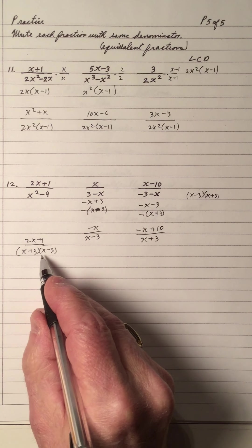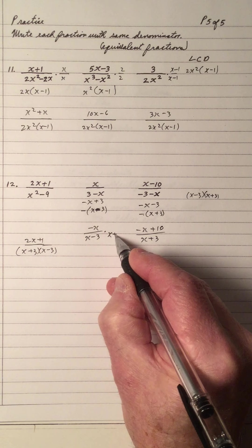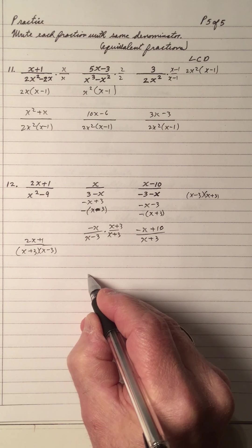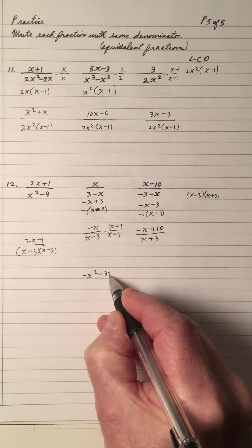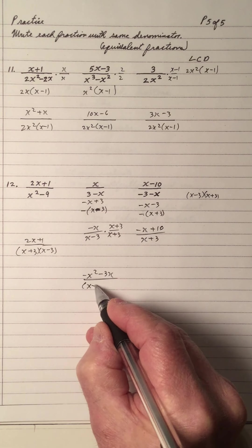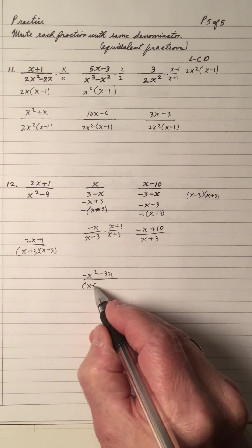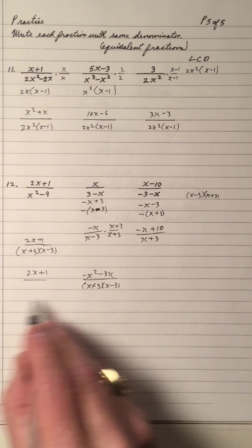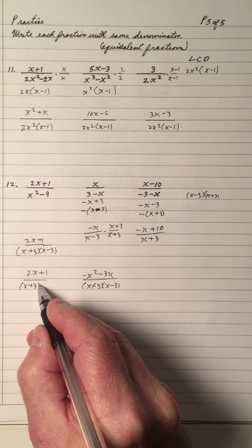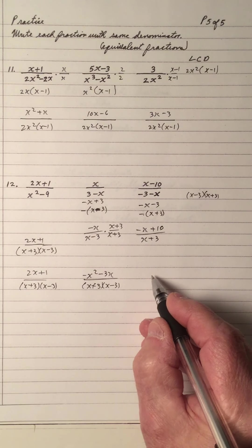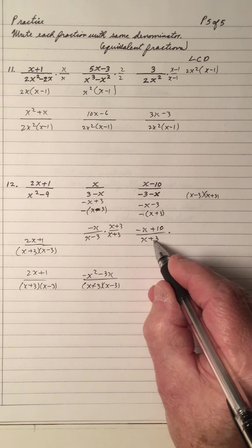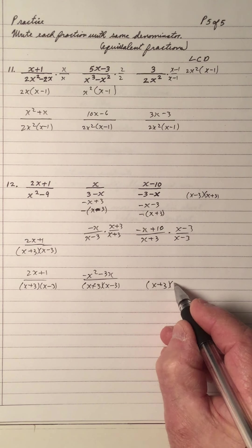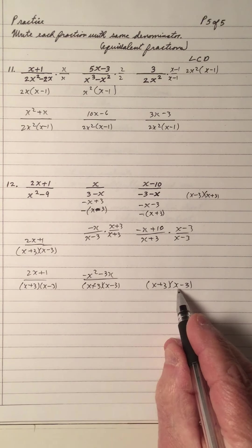That means you don't have to change this fraction. You multiply this one by x plus 3, top and bottom. So that gives you negative x squared minus 3x over x. It can go x plus 3, x minus 3 — makes no difference. And this one is 2x plus 1, all over x plus 3, x minus 3. And this one — x plus 3 is there; we need an x minus 3. So this denominator is x plus 3, x minus 3. All denominators kept the same.